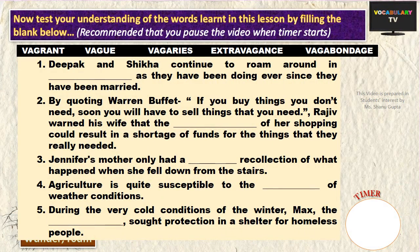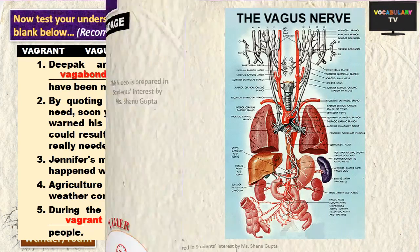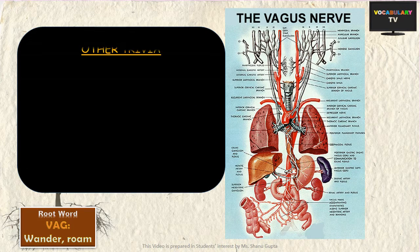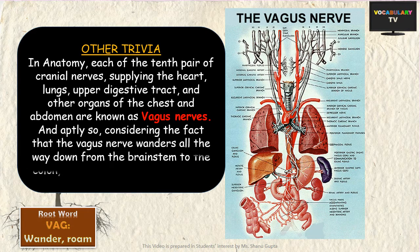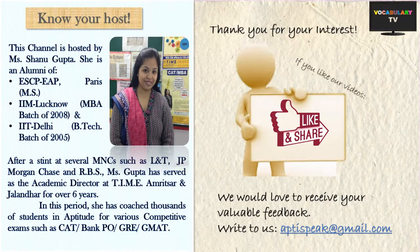Test your understanding of the words learnt in this lesson by filling in the blanks below. It is recommended that you pause the video when the timer starts. As some additional trivia: in Anatomy, we have the vagus nerves, which are perhaps named that way because the vagus nerve wanders all the way down from the brain stem to the colon — quite a long wandering path. That brings us to the end of this video. Hope you liked it. Subscribe to our channel and stay tuned for more such videos. Thank you!